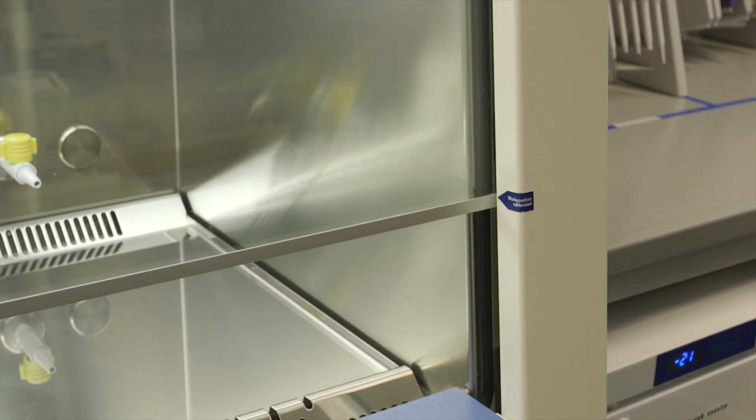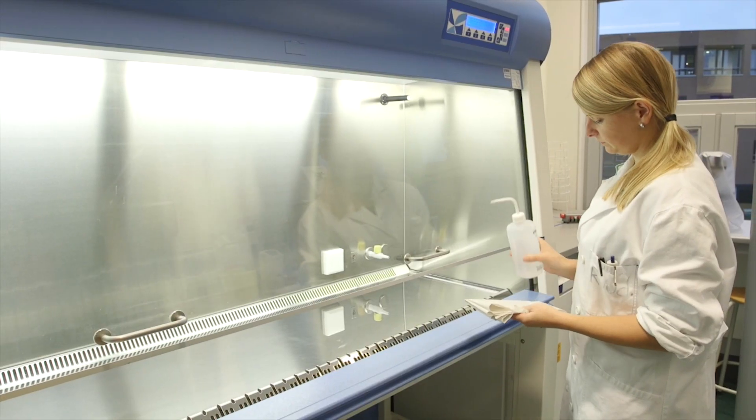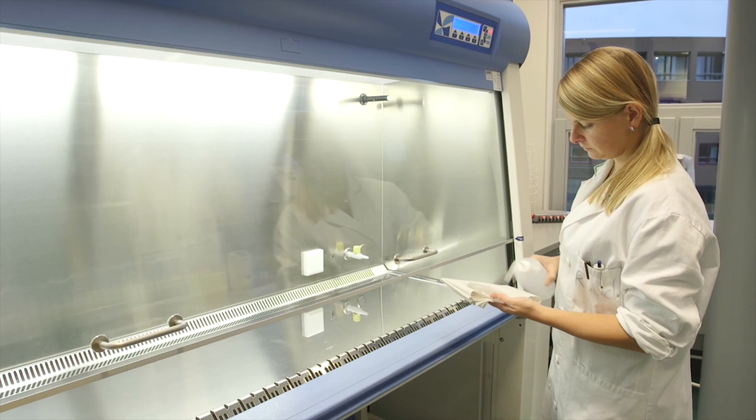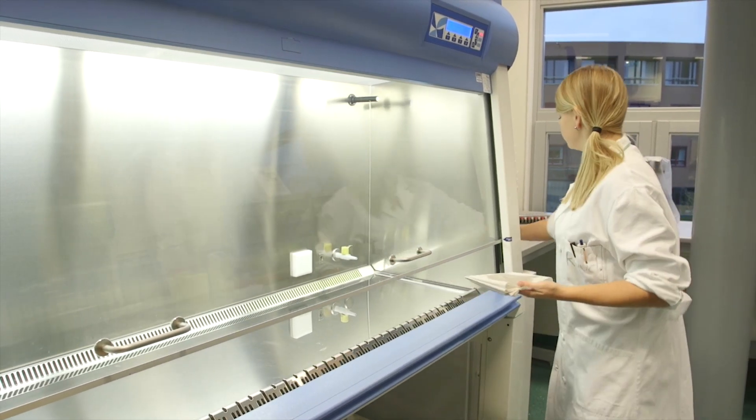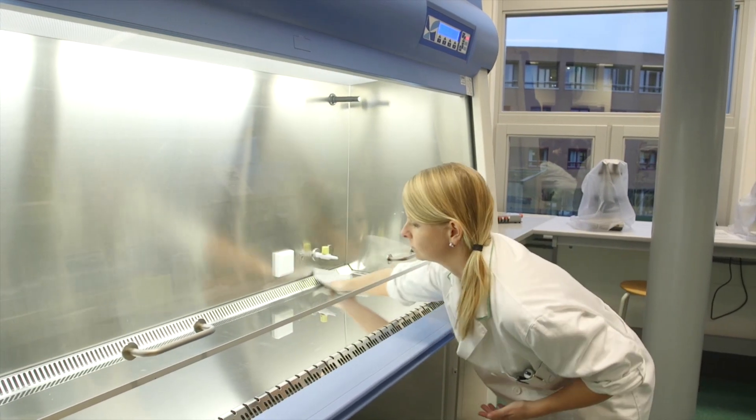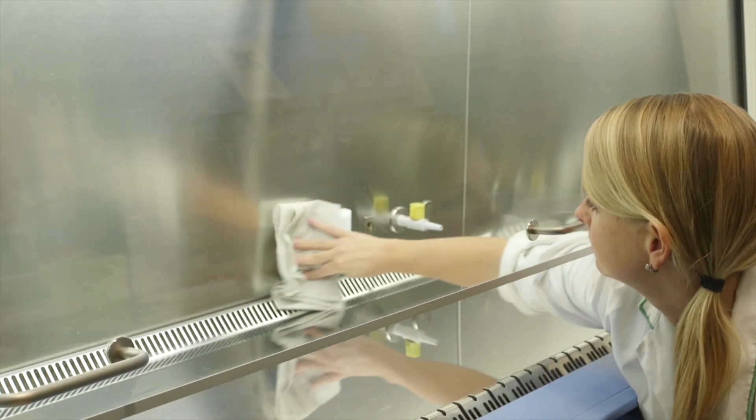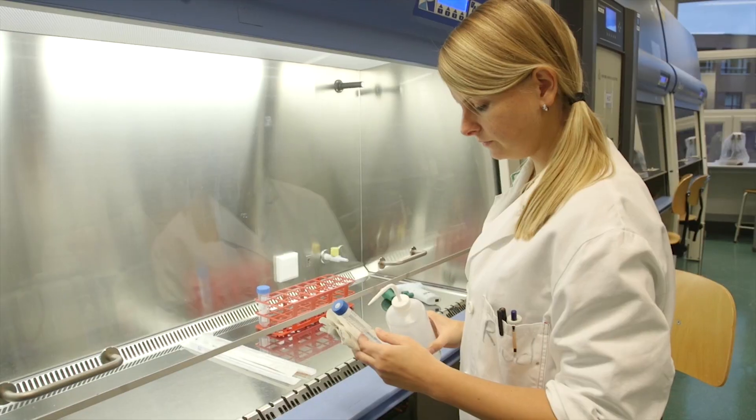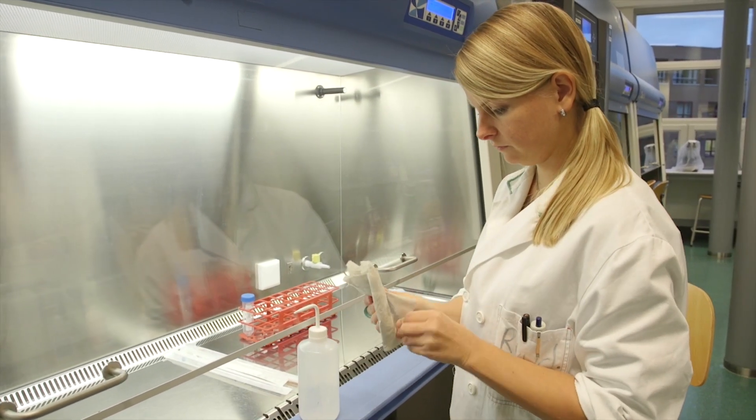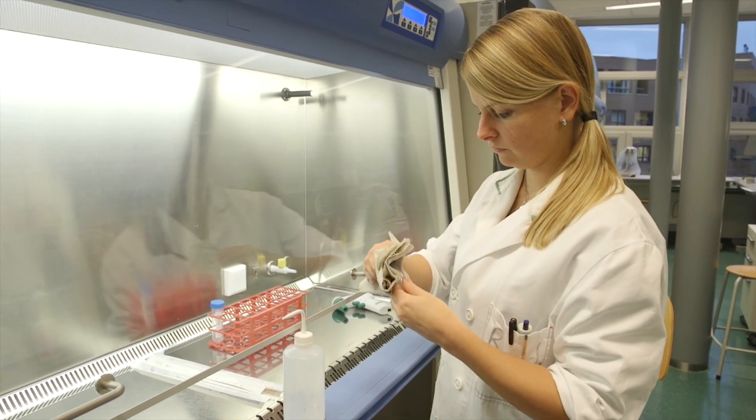Before you start using the cabinet, you need to disinfect the inside with 70% ethanol. The sleeves of your lab coat should be rolled up so they can't contaminate the surface. Work from the back to the front and don't forget the sides. All equipment should be disinfected with 70% ethanol before entering the flow cabinet. Ensure that your work area is well organized.